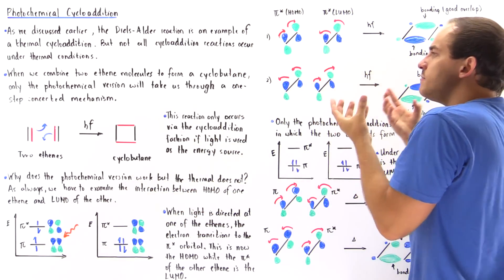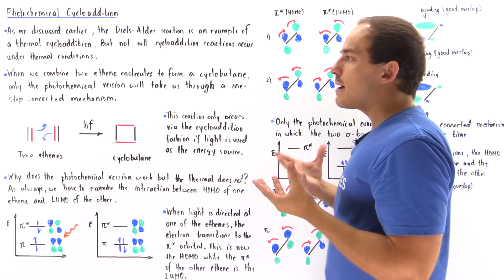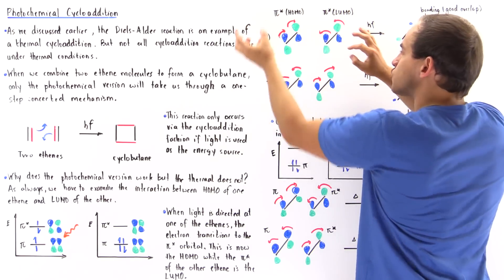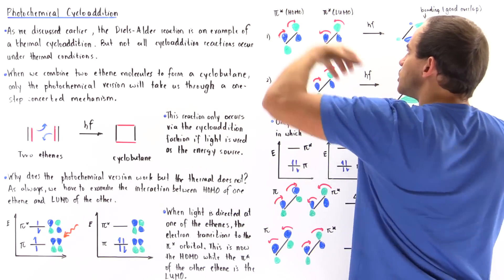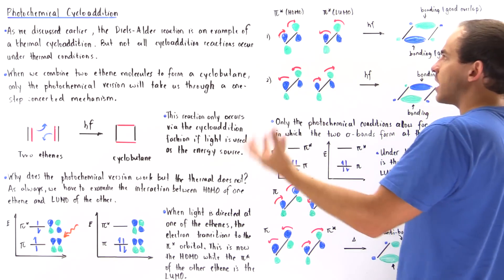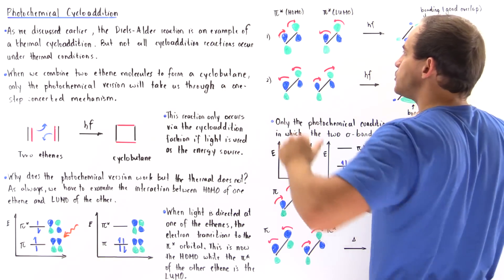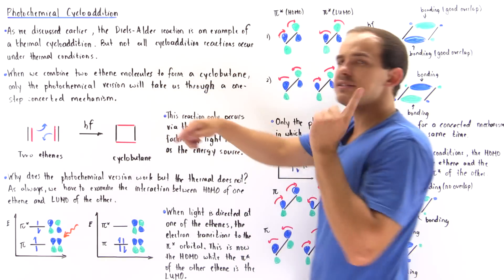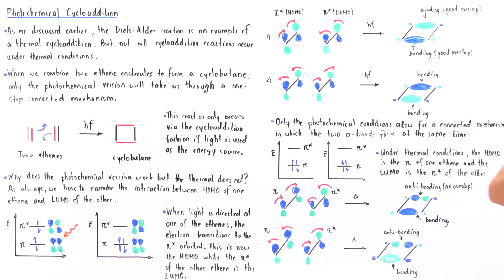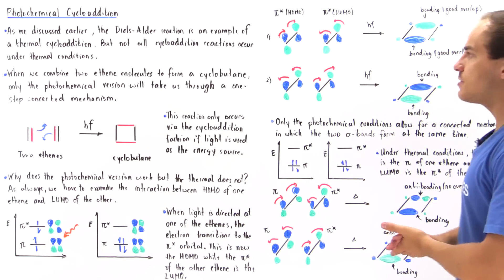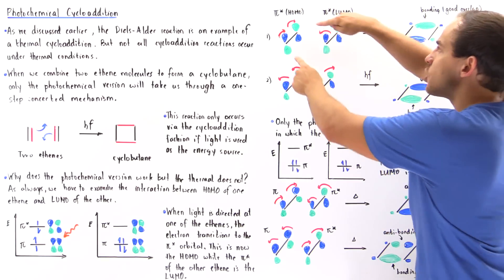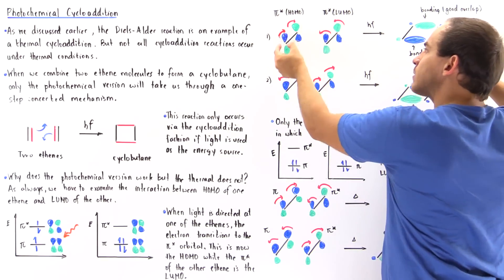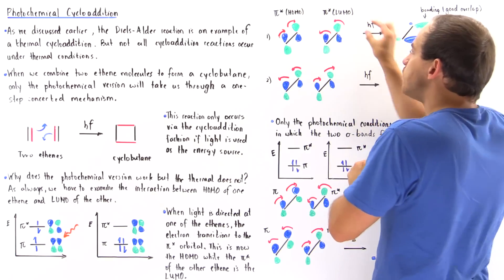A single step means that if these two orbitals rotate in one direction and these two also rotate in some direction, when that rotation takes place, we have to form both bonds at the same exact time in one step.